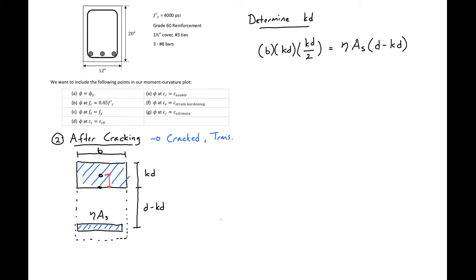Now we'll solve this expression for kd. We can plug in all the values that we know. We have a base width of 12 inches times kd squared, all divided by 2, equals 8.1 times our As, which is 2.37 square inches, times our d, which is 17.6, minus kd.